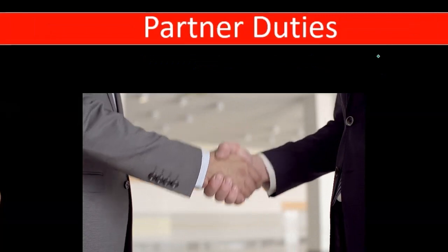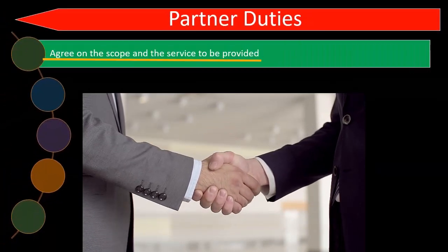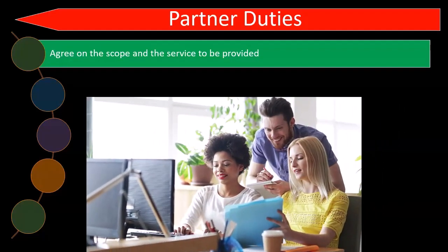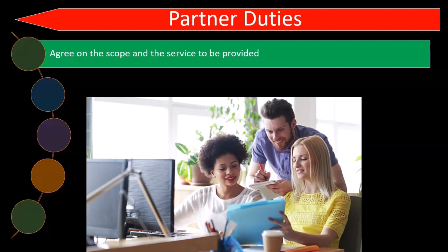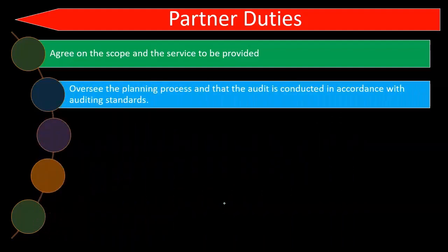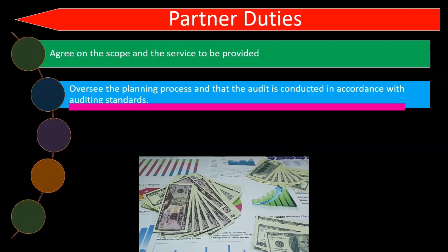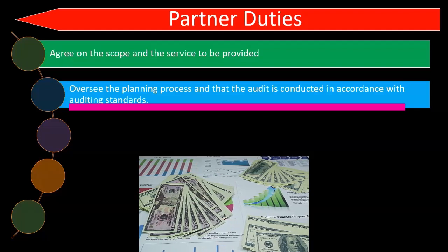In more detail: the top-level partnership is equivalent to the top people in the CPA firm. They agree on the scope and services to be provided. The partnership works closely with the client — setting up the engagement, clarifying what each party is responsible for, and ensuring clear communication with clients regarding the engagement.